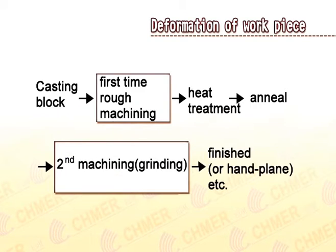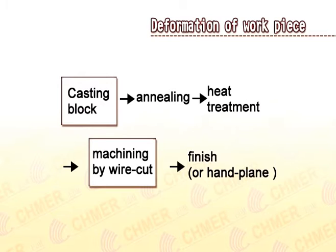B. The Heat Treatment Procedure for Traditional and Full Wirecut Casting Block: Traditional process — First rough machining, then Heat Treatment Anneal, second machining, grinding, finishing or hand planing. Wirecut process — Casting Block, Annealing, Heat Treatment, Machining by Wirecut, then finishing or hand planing.